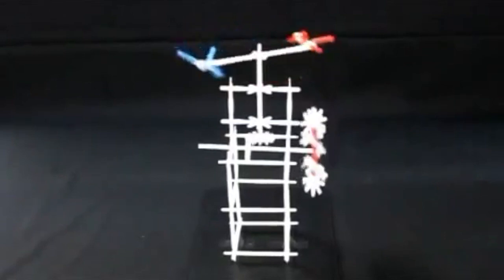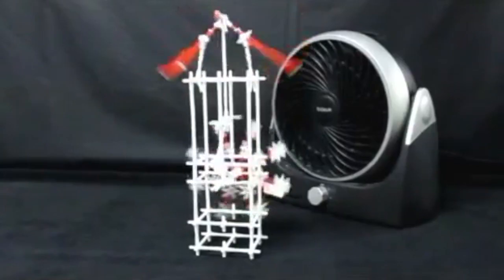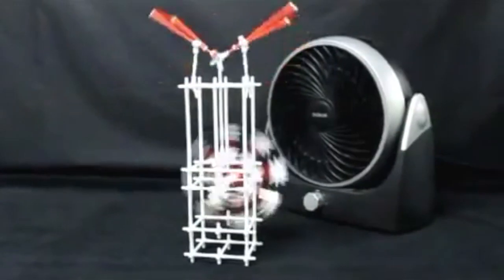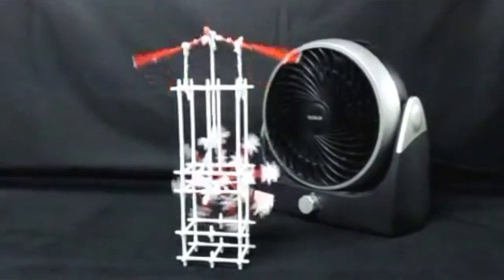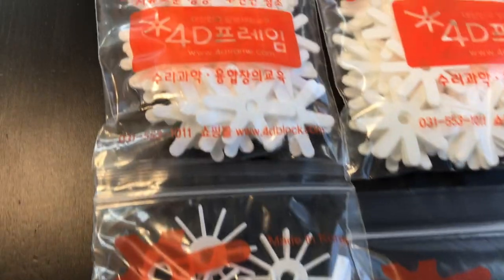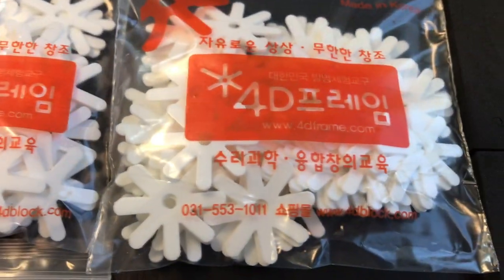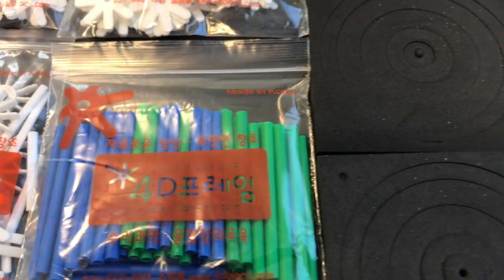The jury will assess how the model works using a wind source, such as an electric fan or a hairdryer. Each team will receive a kit with 4D frame material. You have an hour and a half to complete your task.